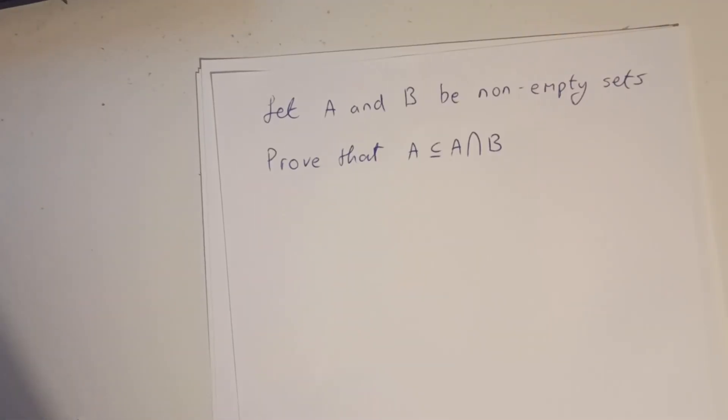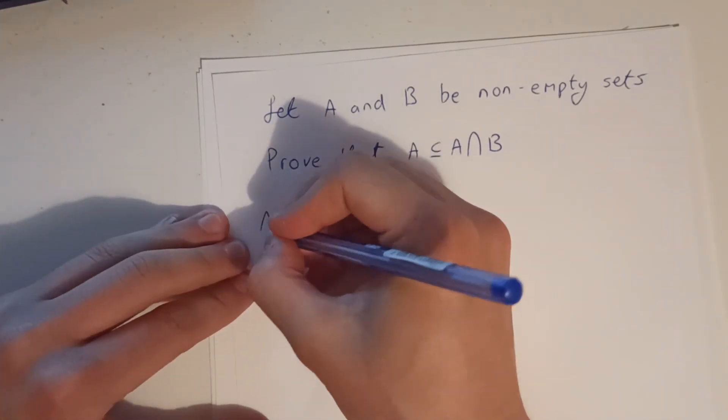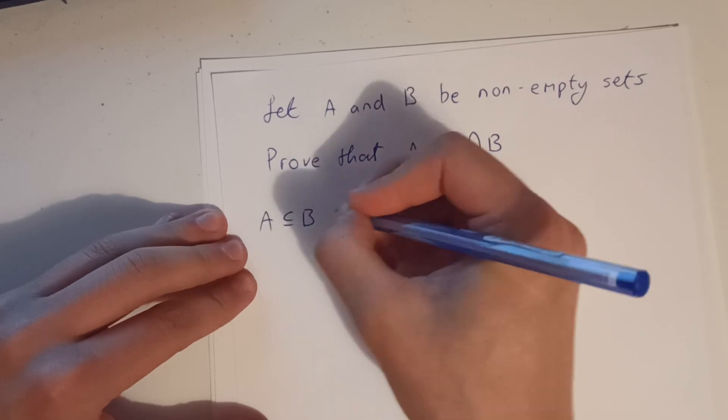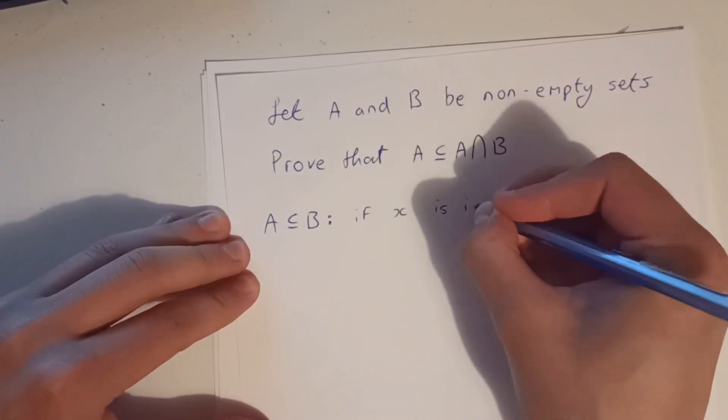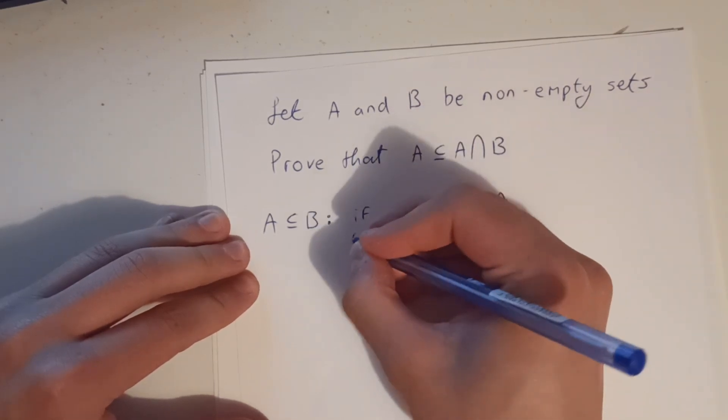So let's see if we can come up with a better proof for this, given what we know. So A is a subset of B, means that if X is in A, then X is in B.